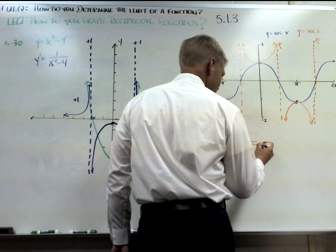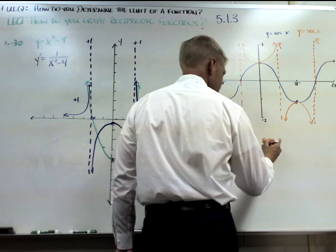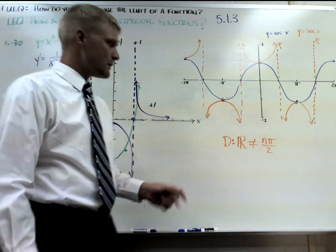So it's all real numbers not equal to n pi over 2, where n is an odd integer.